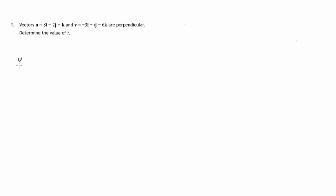This is question 1 from paper 1 of the 2015 SQA Curriculum for Excellence Higher Maths exam. We're given a couple of vectors: vector u, which has components 8, 2, minus 1 — let's write it in column form — and vector v, which has components negative 3, t, and minus 6.